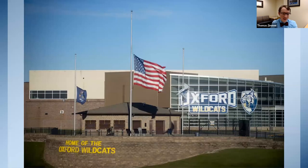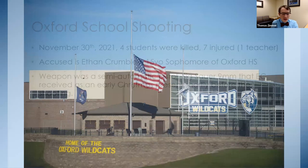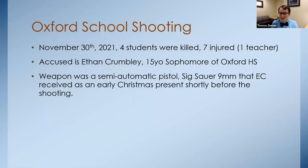This is Oxford High School, home of the Wildcats, flying all their flags at half-mast. On November 30th there were four fatalities — all were students — and six students were injured and one teacher was injured. The accused is Ethan Crumbly, a 15-year-old sophomore. The weapon he used was a semi-automatic pistol he had gotten four days before as an early Christmas present from his family.